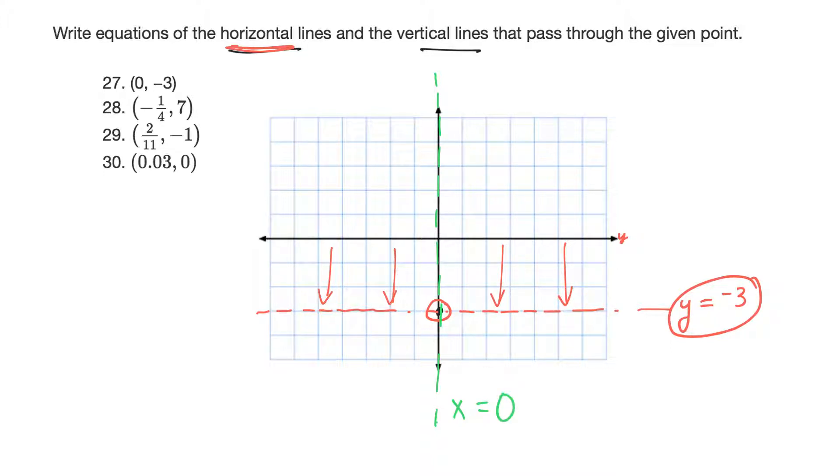Okay, so that would be the equation for those lines. And for all of them, it's the same kind of thing. So if this is your point here, your horizontal line is going to be y is equal to 7, and your vertical line is going to be x is equal to -1/4. Okay, hopefully that helps you with that one.